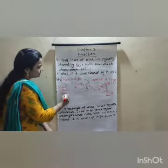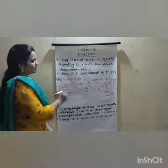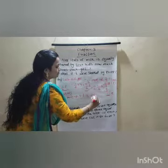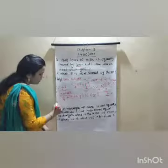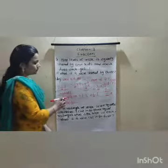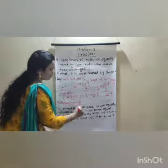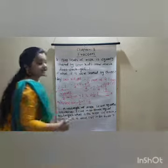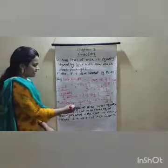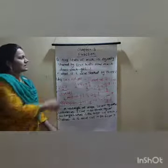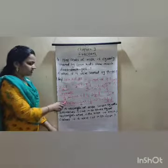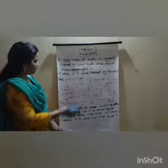Then how to write in words? In words: 1/4 part of 9 liters is 2 and 1/4 liters. Then how to write in multiplication form? 1/4 into 9 equals — write in another way — 1/4 of 9 equals 2 and 1/4 liters. This way you can write the multiplication form. The first question is over. 9 liters shared by 4 kids, each kid gets 2 and 1/4 liters.